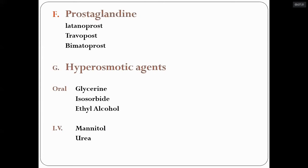Prostaglandin analogs are newer drugs with more IOP-lowering action and are more useful in younger patients. They are also frequently used nowadays. Osmotic agents include glycerin, isosorbide, and ethyl alcohol given orally, while intravenous options are mannitol and urea. These are used when IOP is very high for acute lowering.